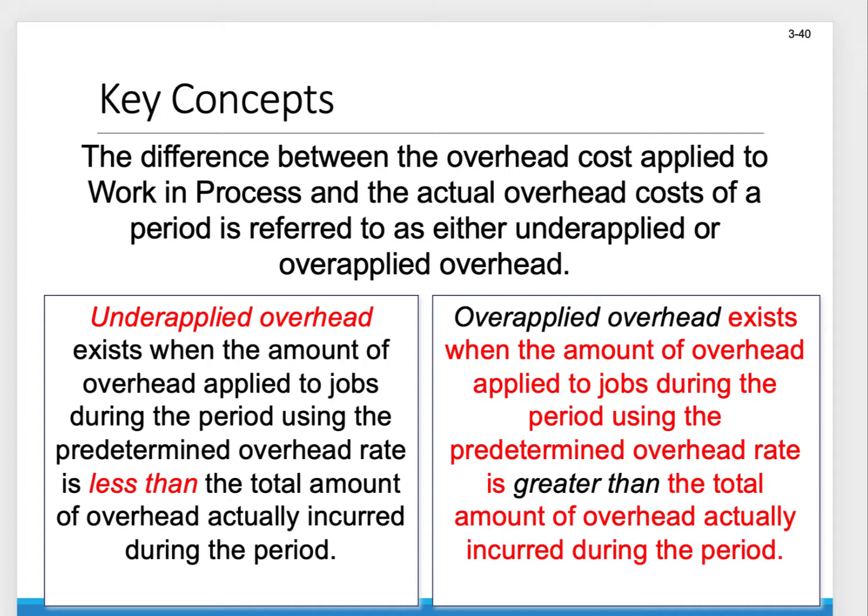Let's look at underapplied overhead first. Underapplied overhead occurs when the amount of overhead we actually apply to jobs during the period — using the predetermined overhead rate — is actually less than the total amount of overhead that was really incurred. So we applied less than we actually incurred.